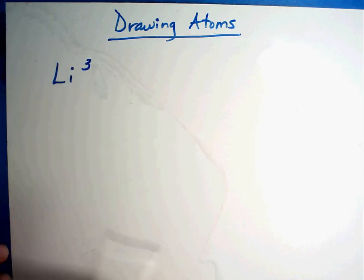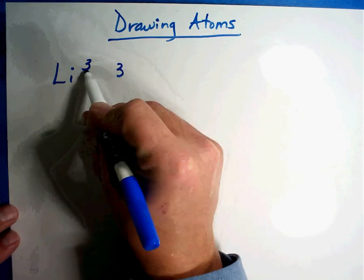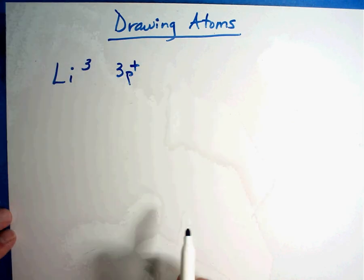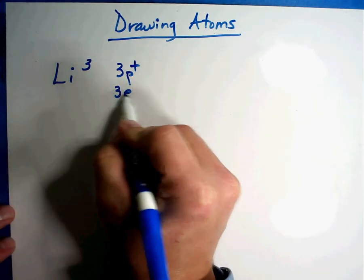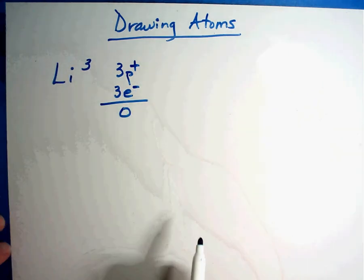For today we're going to ignore the neutrons. We know from the atomic number that it has three protons, and because every atom is neutral, if there are three pluses, there must be three minuses, so you're going to have three electrons. It's neutral.